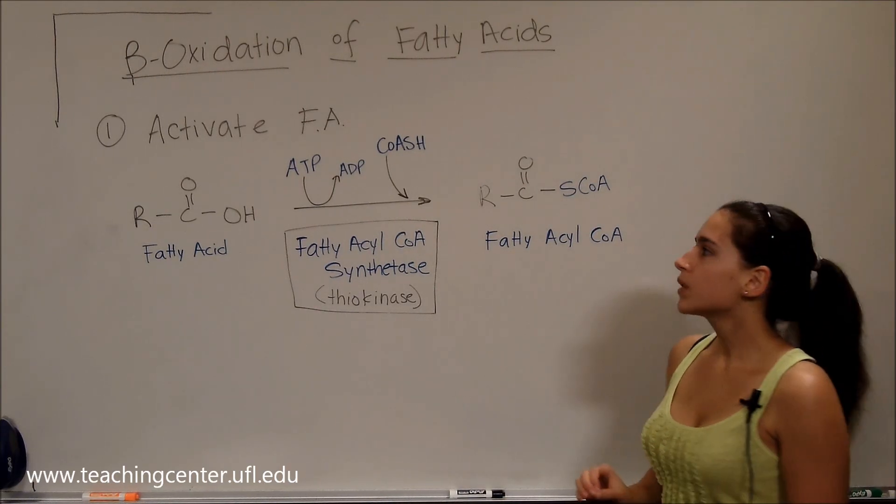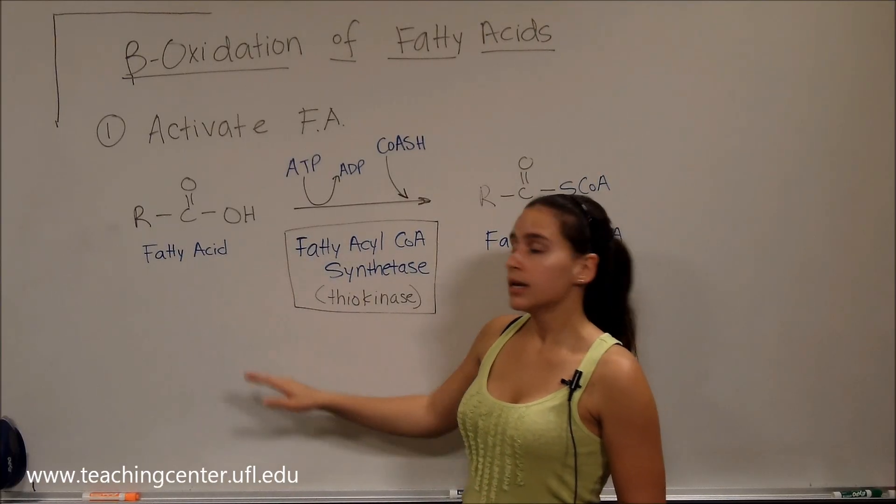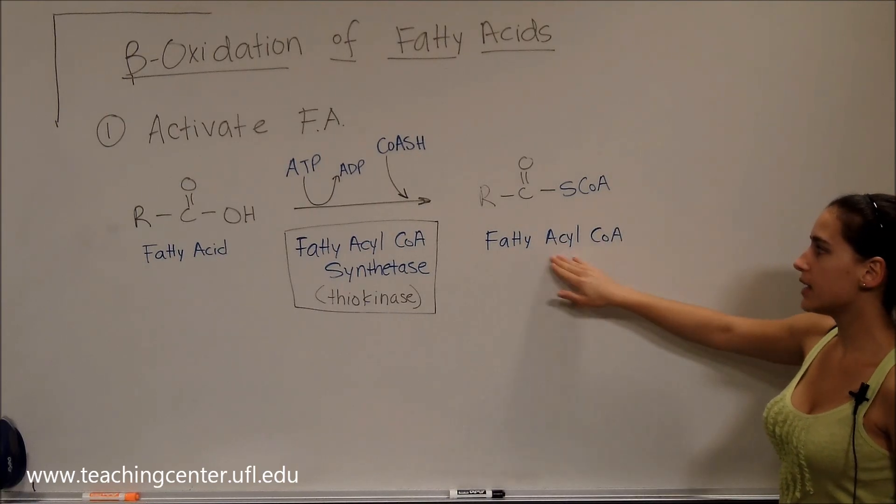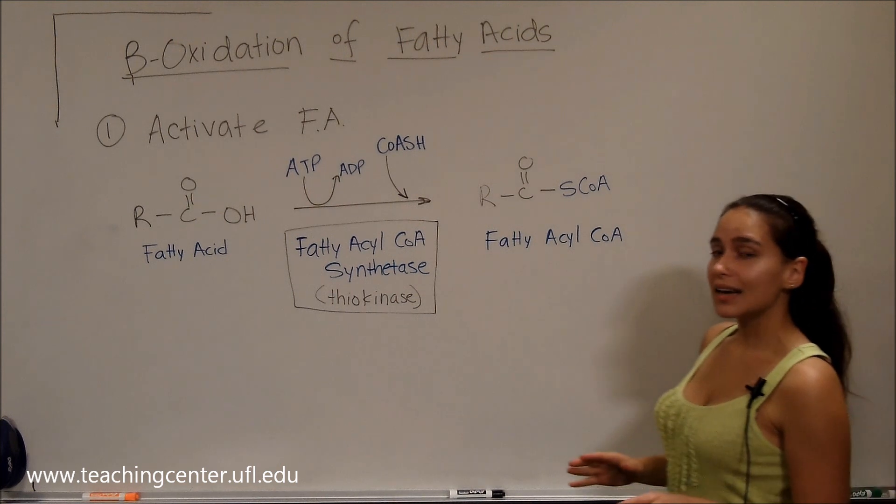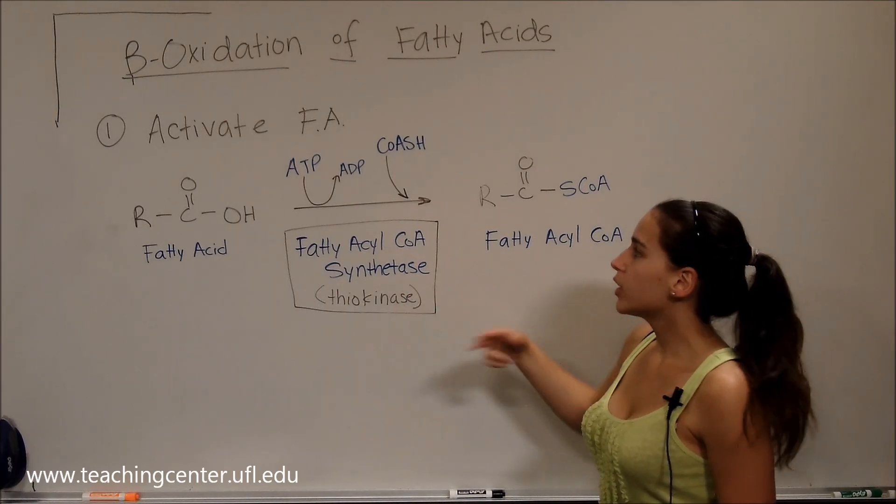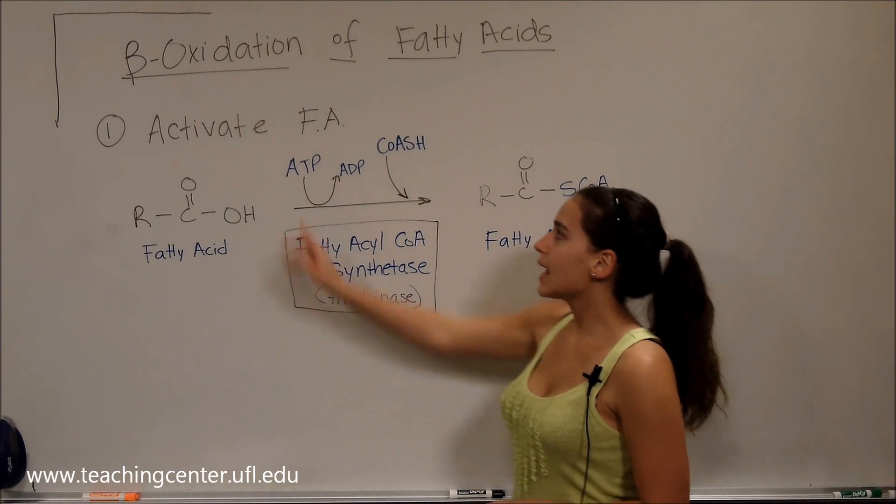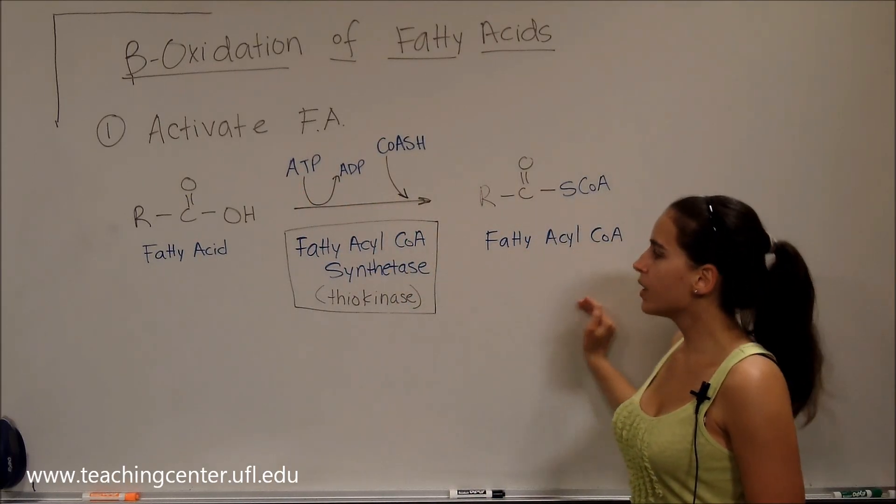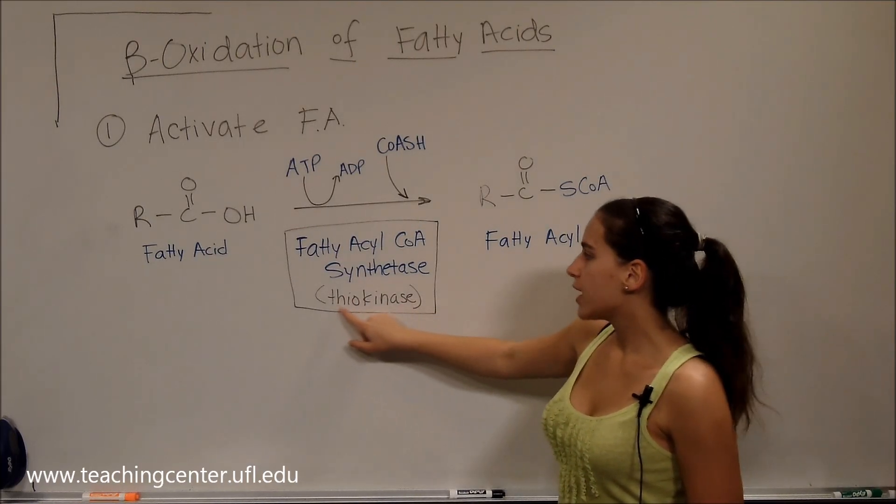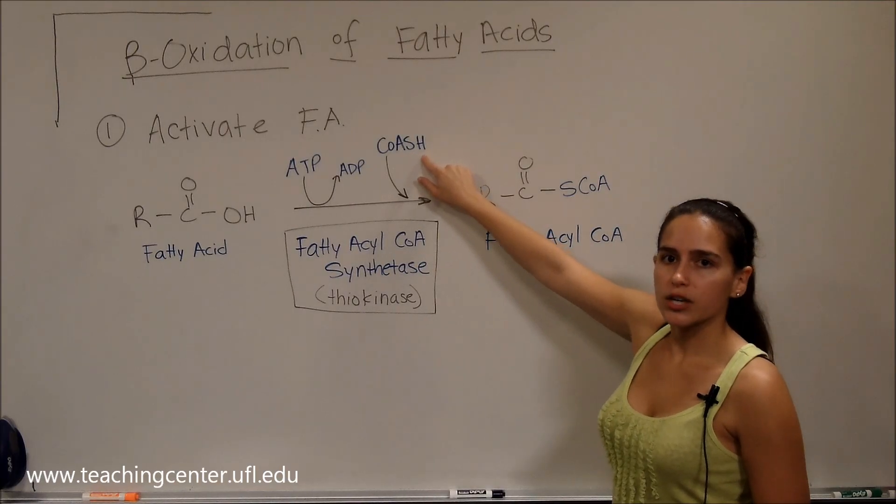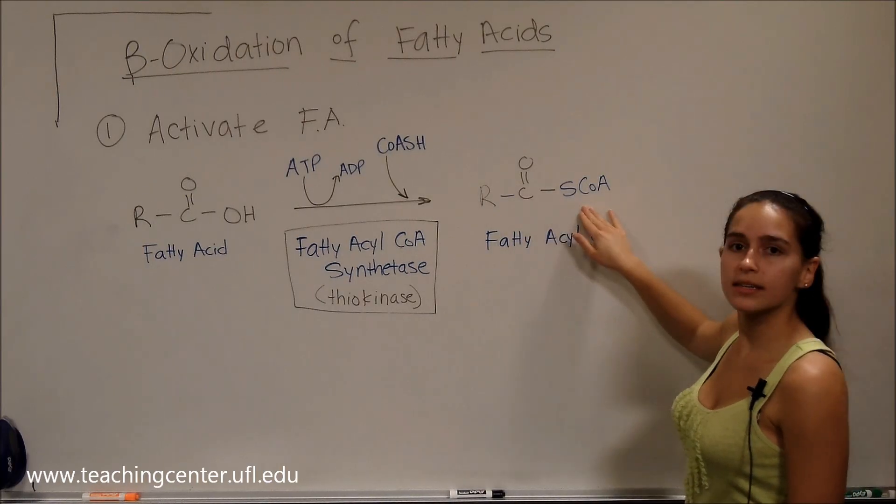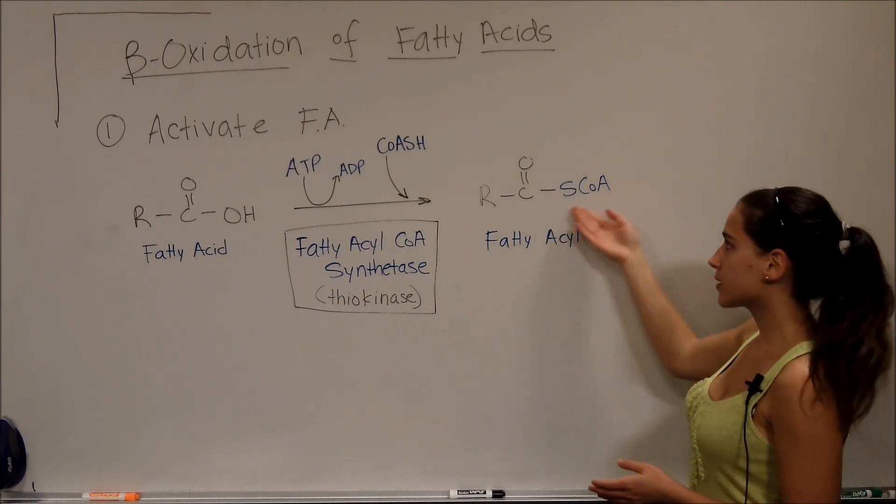So what is our first step? First, we have to activate the fatty acid. Activating the fatty acid means we're going to be adding a CoA group at the end, making it a fatty acyl CoA. This is going to be catalyzed by fatty acyl CoA synthetase. Looking at the name of the enzyme, synthetase, we get a clue as to what we need. We need ATP to make this reaction happen. This is also called a thiokinase. And a kinase, we know it uses ATP, and thiol is going to represent the SH group on the CoA that we added. Looking at the product, we also know that we will get acetyl CoA as our product, as one of our products.